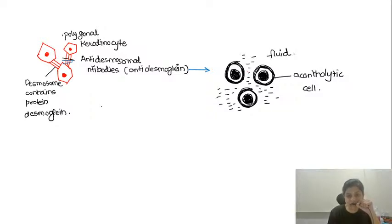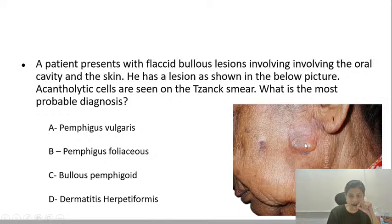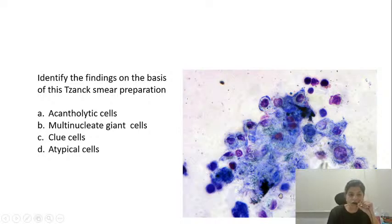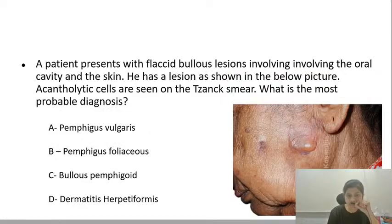These individual keratinocytes become circular, the nucleus becomes large, and there is peripheral condensation of cytoplasm — these cells are called acantholytic cells. When you do a Tzanck smear — you de-roof the bulla, there is an erosion under it, you scrape the base of the erosion, place that smear onto a clean glass slide and stain it with Giemsa — you will be able to see the typical Tzanck cells. You can see the cell has become larger, rounded, the nucleus has become larger, and there is peripheral condensation of cytoplasm.